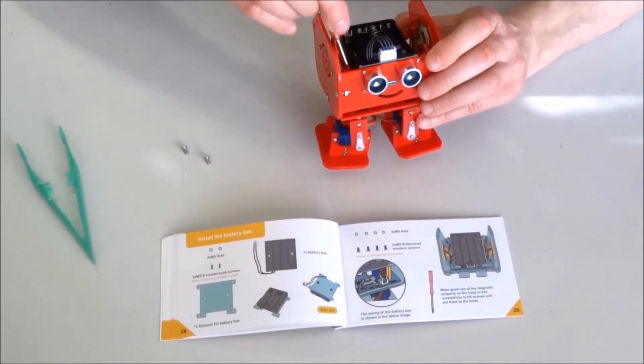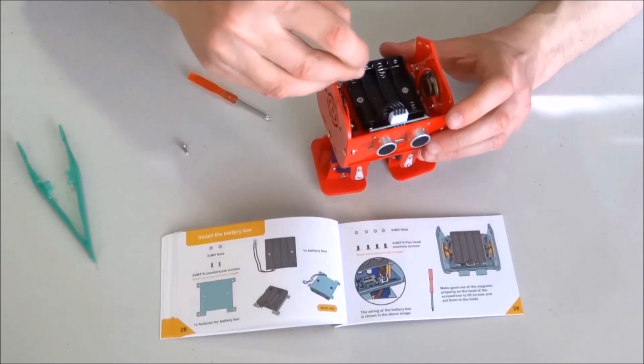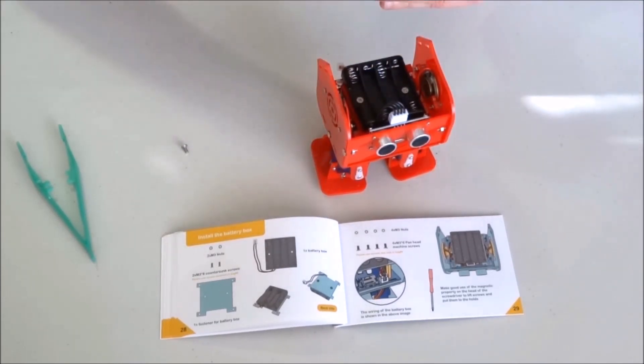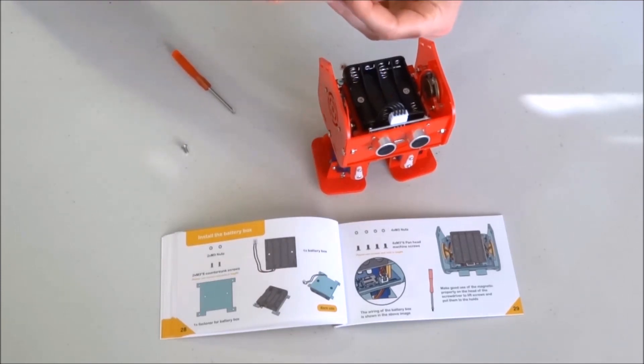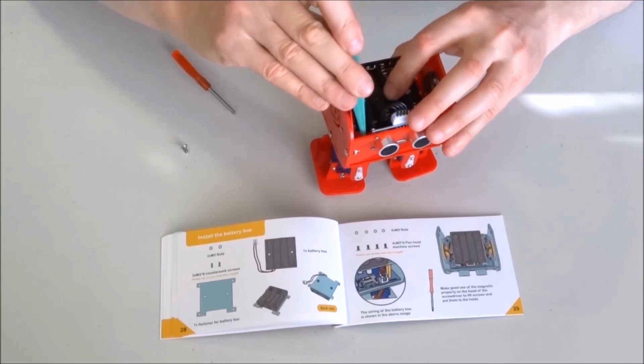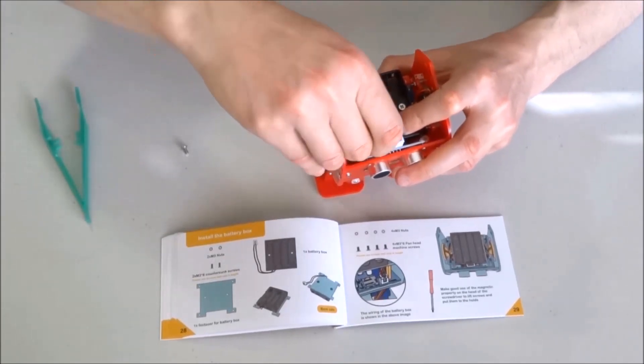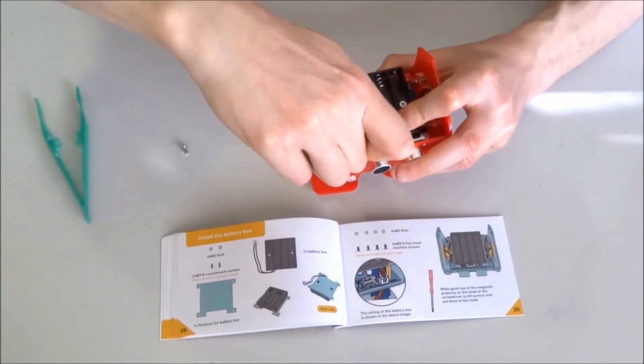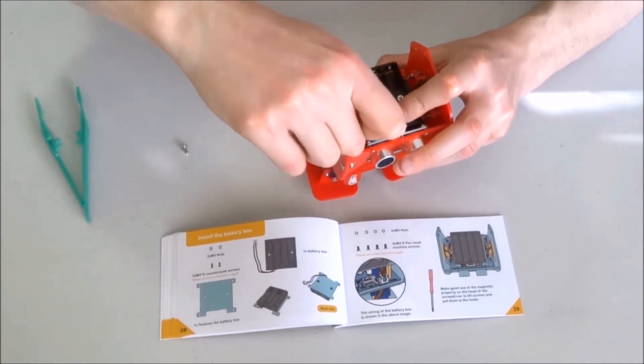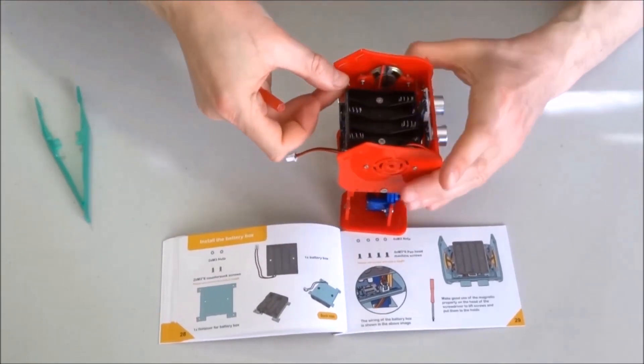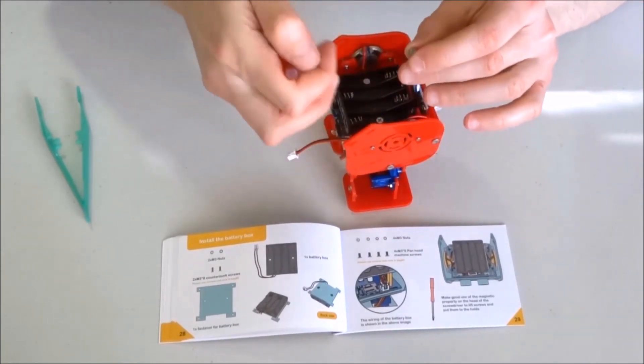Make sure no cables are obstructing any of the pillars and continue with the rest of the bolts. Again, I will use the tweezers to place the bolt in place as the space is tight, and then tighten it with the screwdriver. Do not over-tighten until everything is in place.